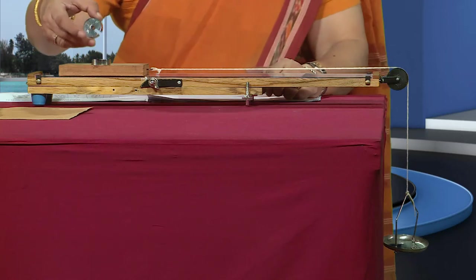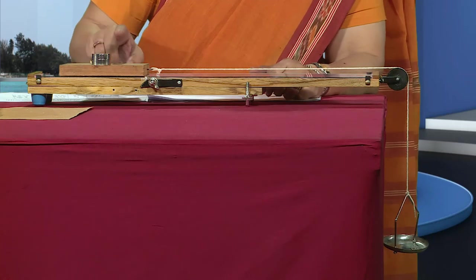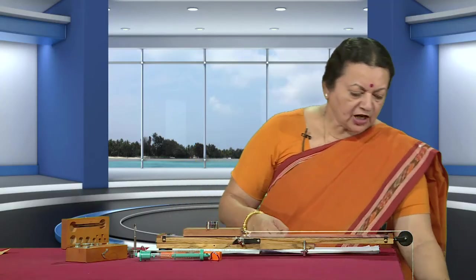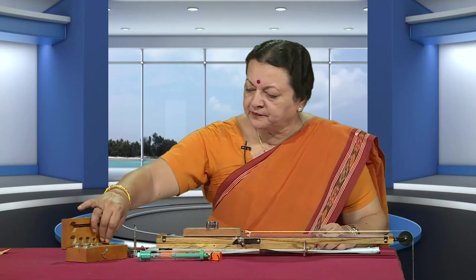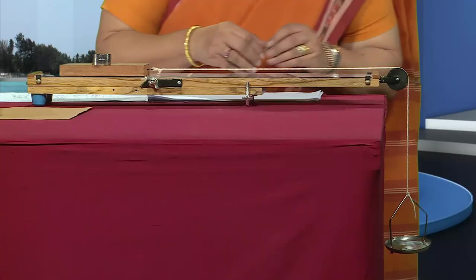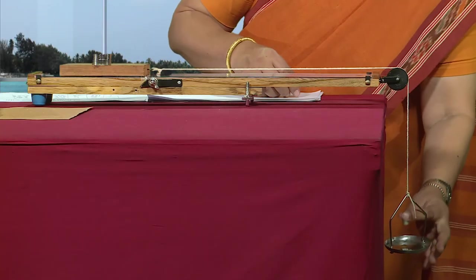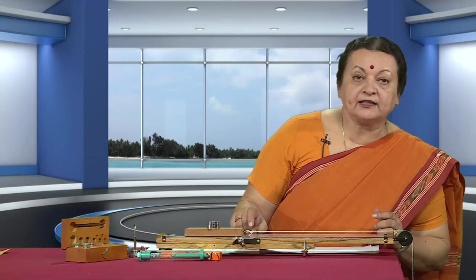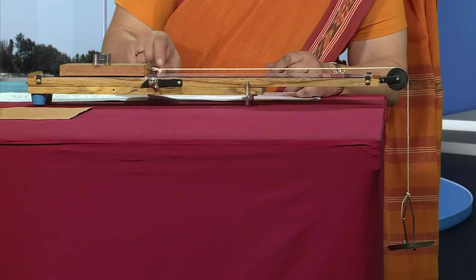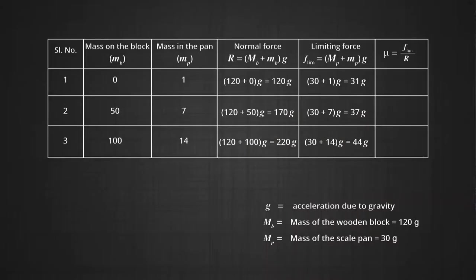Again, add 50 grams on top of the block and check how much weight is required in the pan. With 14 grams in the pan, that is just enough. So 14 grams in the pan and 100 grams on top of the block — this is our next reading.